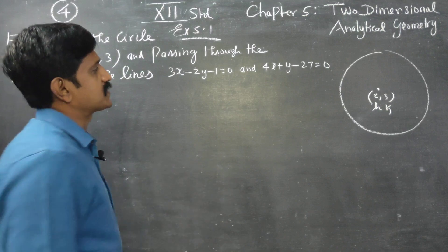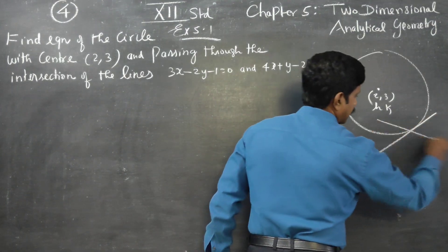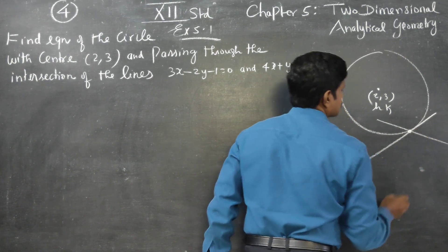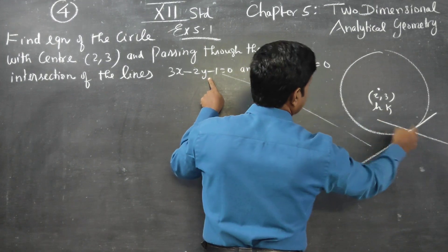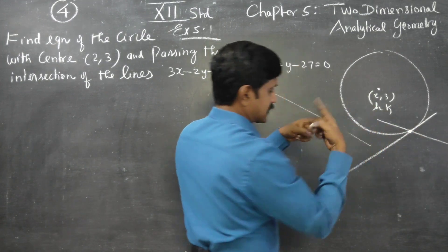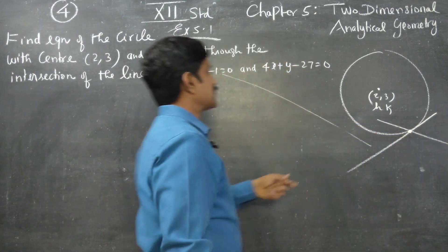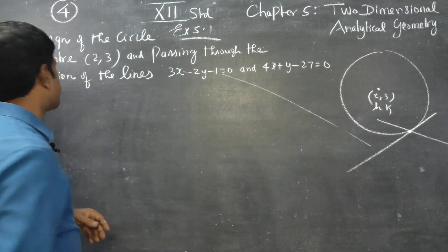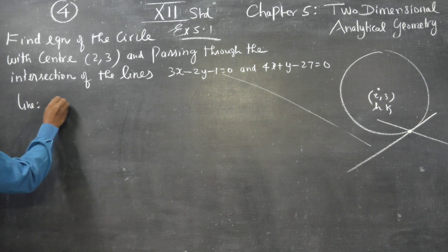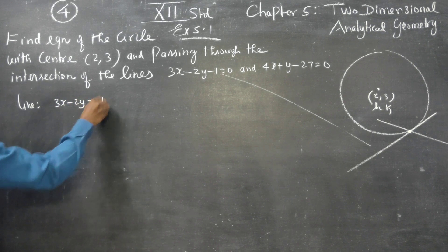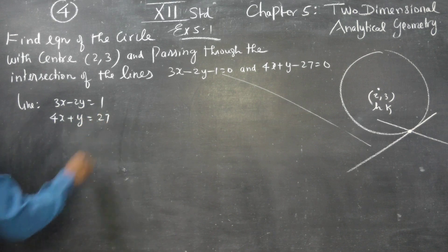The circle passes through the point of intersection of two lines. This is my line 1 and this is my line 2. The point of intersection is where the circle passes through. I am going to solve these two equations. The first straight line is: 3x minus 2y equals 1. The second equation is: 4x plus y equals 27.